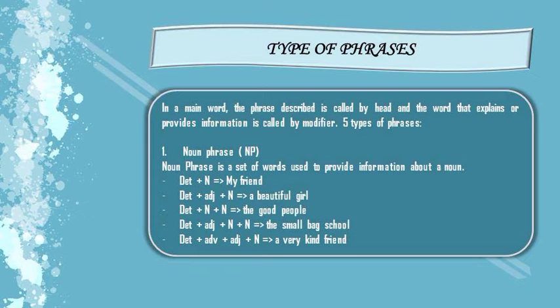The first is noun phrase, usually called NP. The keywords of NP are: determiner plus a noun — for example, 'my friend'; determiner plus adjective plus a noun — for example, 'a beautiful girl'; and determiner plus a noun plus a noun — for example, 'the good people,' where 'the' is the determiner, 'good' is a noun, and 'people' is a noun.